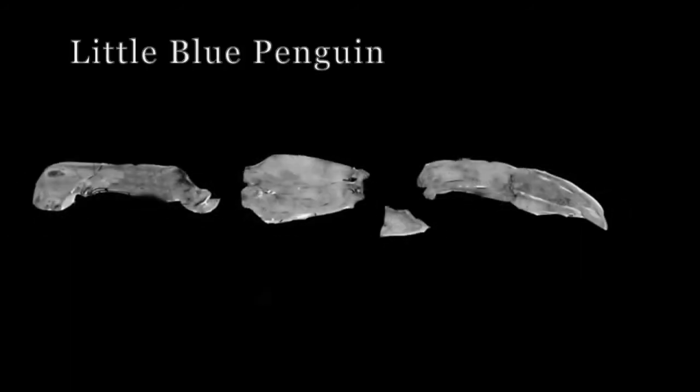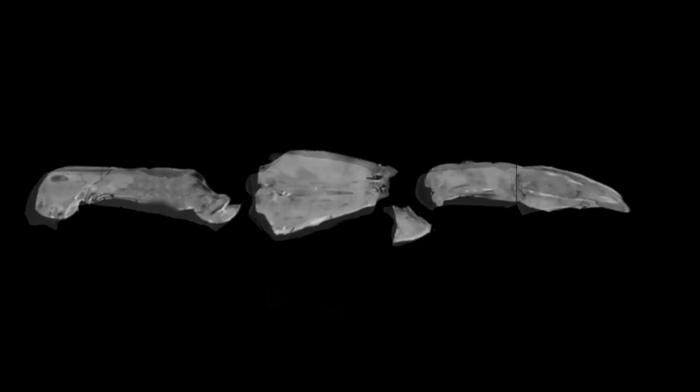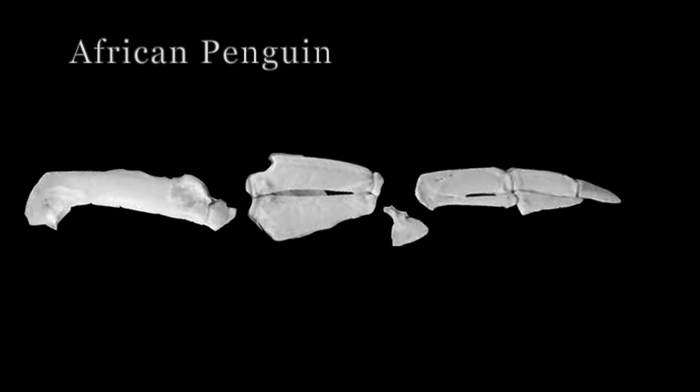As penguins continue to differentiate, the same trend continues. The arm width increases and the humerus shortens while the arms, carpals, and phalanges all elongate. This trend is observable in the next two penguin species — first in the little penguin and then the African penguin.